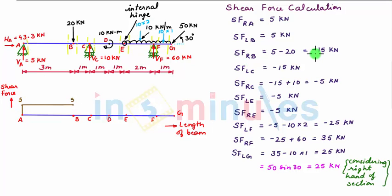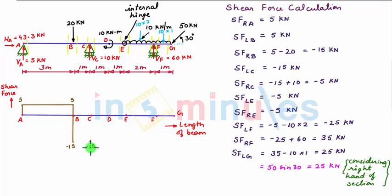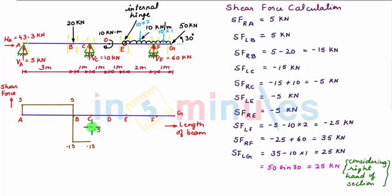Shear force towards the right of B is minus 15 kN. So again at point B, let us plot minus 15 kN shear force and connect it with a vertical line. Next, shear force towards the left of C is minus 15 kN. So again at point C, a minus 15 kN shear force, and let us connect it with point B by a horizontal line, denoting that shear force remains constant between point B and C. Now shear force towards the right of C is minus 5 kN. So we plot minus 5 kN shear force at point C and connect this by a vertical line.